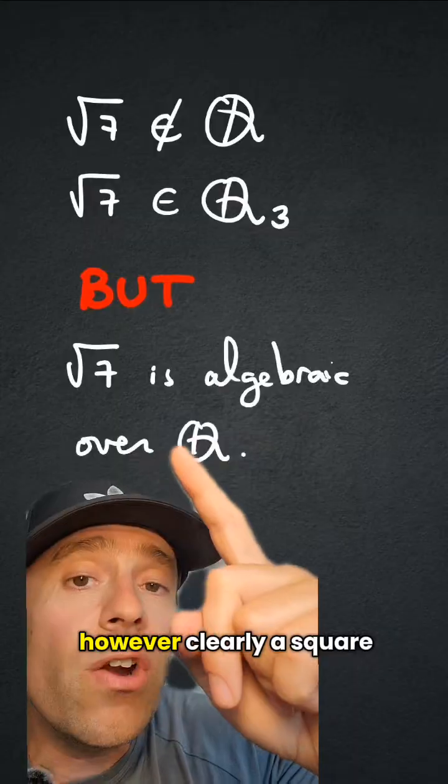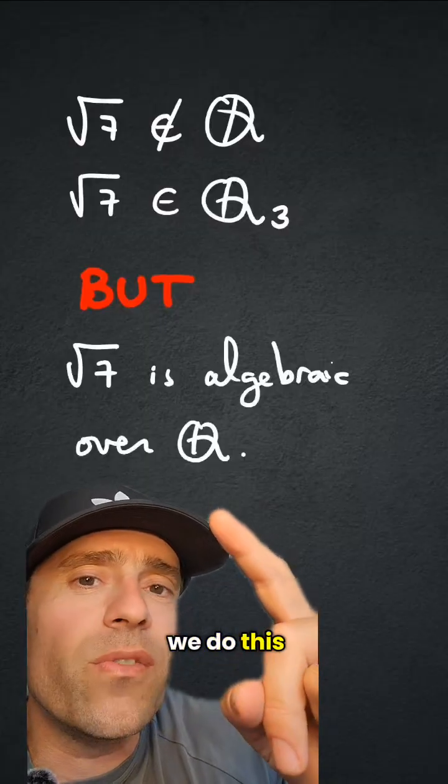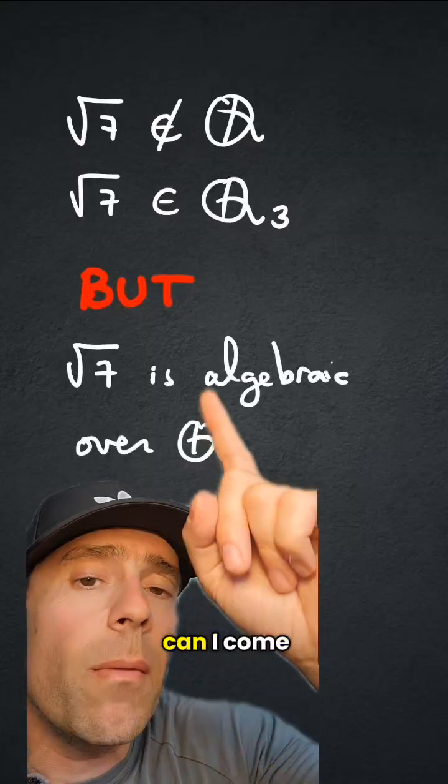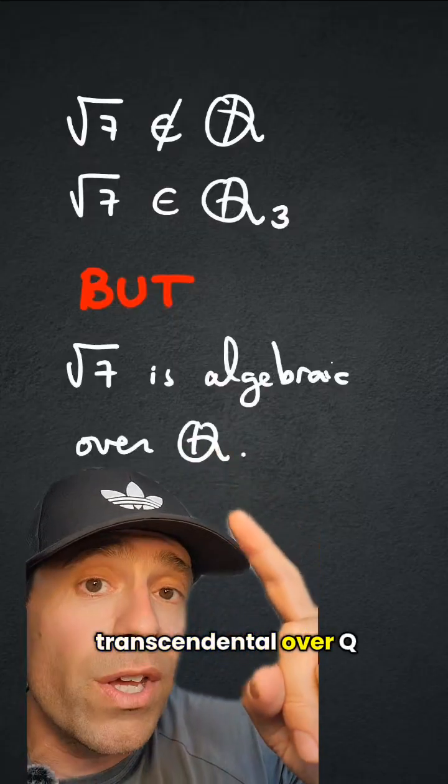However, clearly square root of 7 is algebraic over Q, so the question now is, can we do this but with transcendental numbers? Can I come up with a number in Q_3 that is actually transcendental over Q?